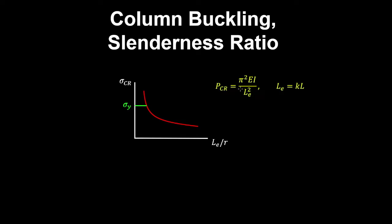We previously derived the Euler buckling load and wrote it in terms of the effective length, which is a factor k that depends on the end restraints of the column multiplied by the length of the column.